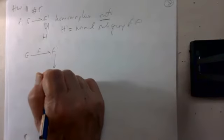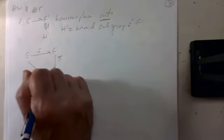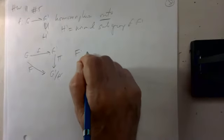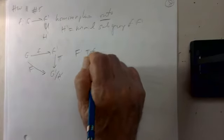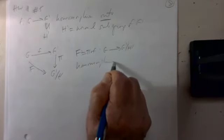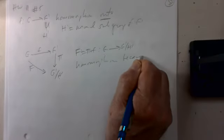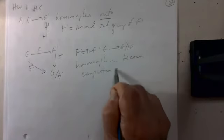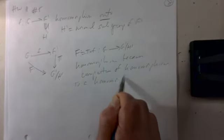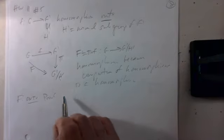F is also onto. To see this, take any coset y′H′ in G′/H′. Since f is onto, there exists x in G with f(x) = y′. Then F(x) = π(f(x)) = π(y′) = y′H′. So every coset is the image of some element, proving F is onto.